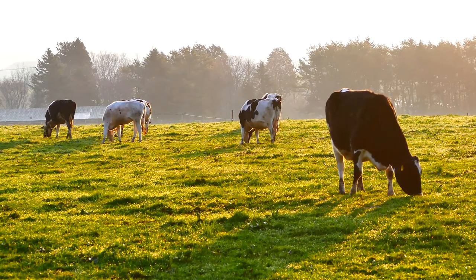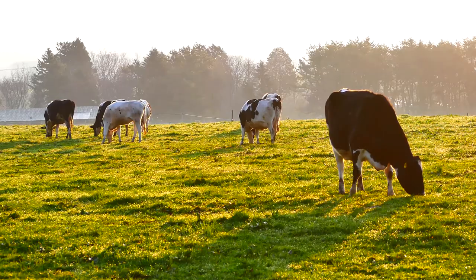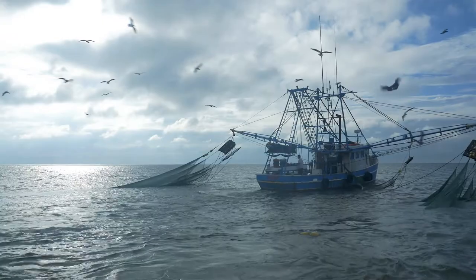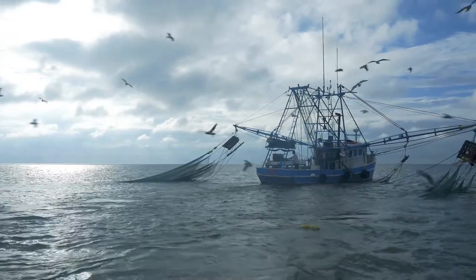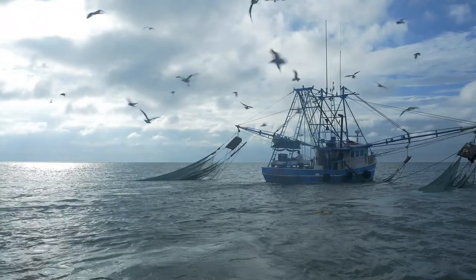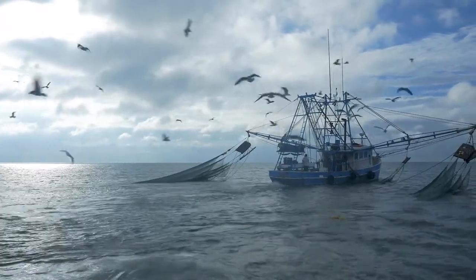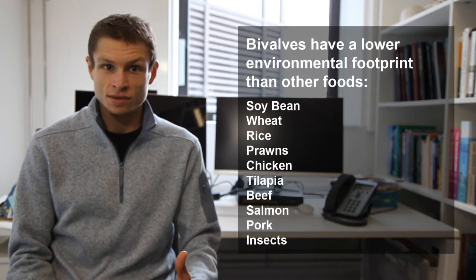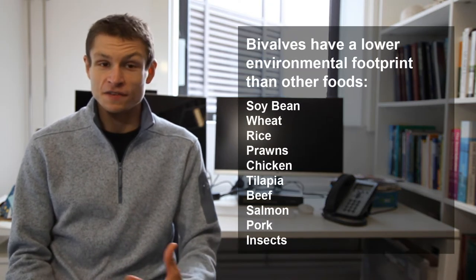Meat and fish are particularly nutrient rich but there are issues. Meat is responsible for some of our biggest greenhouse gas emissions. With fish we've got issues with overfishing and an aquaculture industry which is expanding and reliant upon wild caught fish to support itself. There's a real need for a nutrient rich food source which doesn't cost the earth and is efficient to farm.